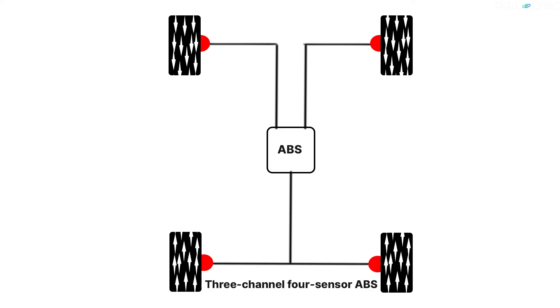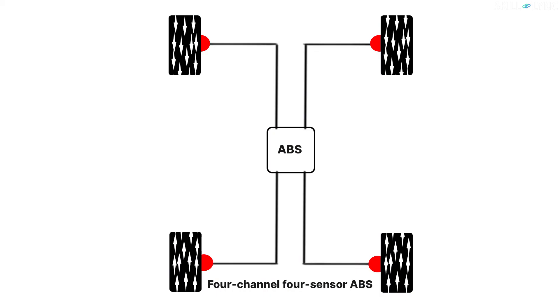In the 3 channel 4 sensor ABS, each wheel has a sensor and a separate valve is used for controlling each front wheel. Another valve is used to control both the rear wheels. Although the wheels have individual sensors, the rear wheels are controlled together which reduces the effectiveness. It can be found in older vehicles with 4 wheel ABS. The last type is the 4 channel 4 sensor ABS. Here, every wheel will have a sensor and a valve to control them. Since the valves are individually controlled, maximum braking force can be applied. Modern cars use this type of ABS for greater safety. That's all about the types of ABS.